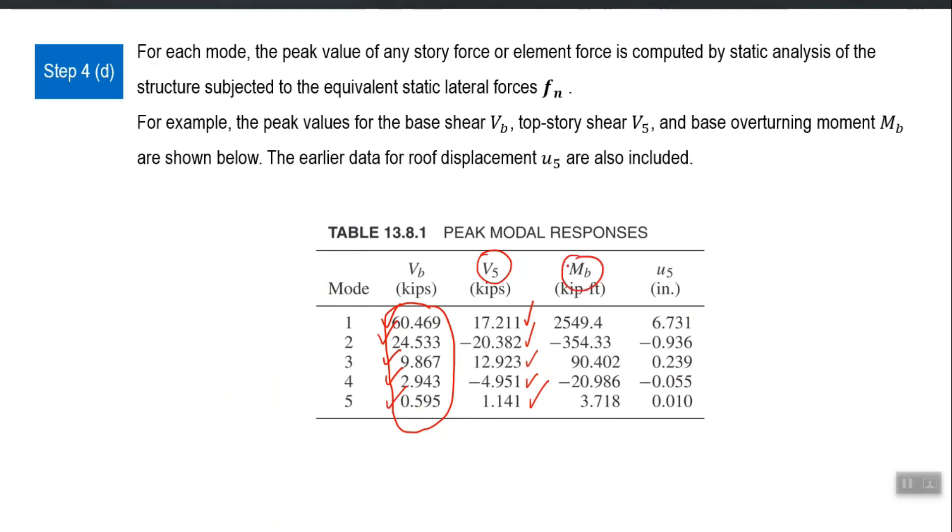Base moment is one quantity which you may be interested in. So, you apply first mode pattern, calculate base moment. This is the number. You apply second mode pattern, you get another base moment and now it is negative because some forces are positive side, some are negative side for second mode. By the way, for base shear, it is for all modes it is positive, but for story shear in fifth story, it is sometimes negative, sometimes positive.